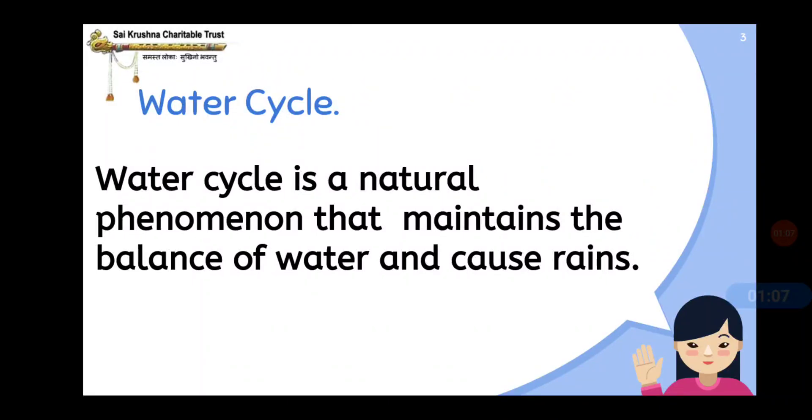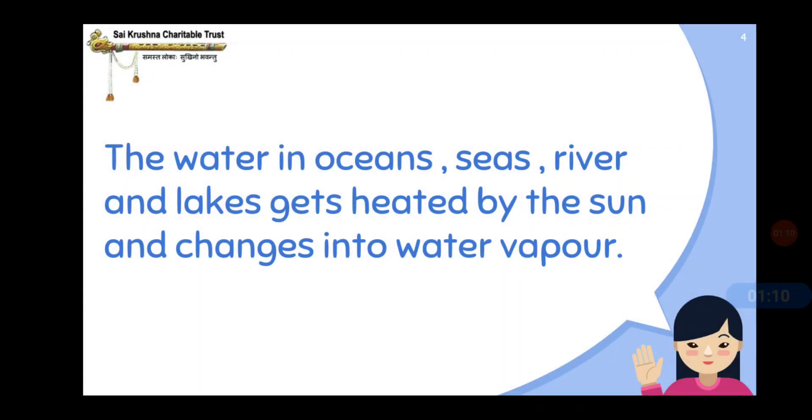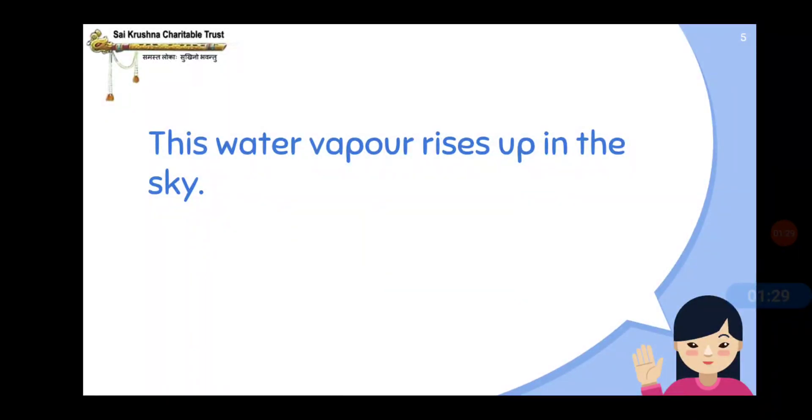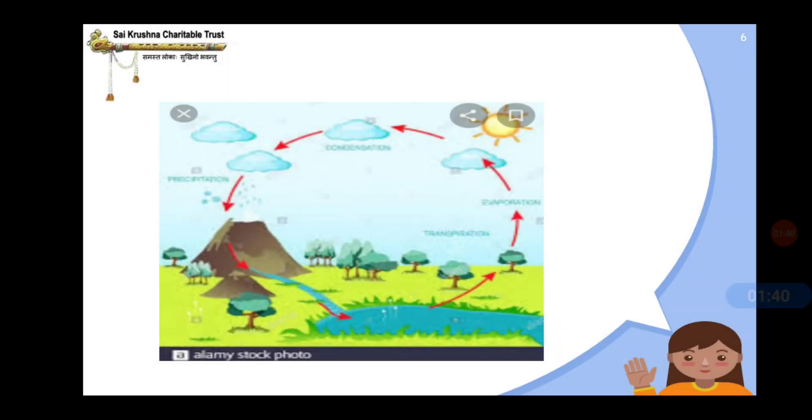The water in oceans, seas, rivers and lakes gets heated by the sun and changes into water vapor. When the water is heated, it will turn to water vapor. This water vapor rises up in the sky. You can see the process here.